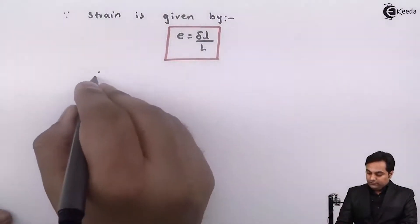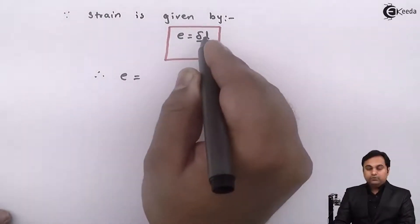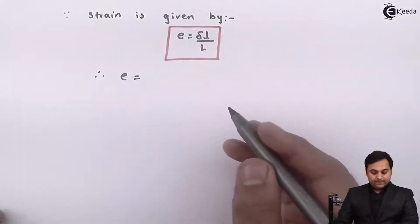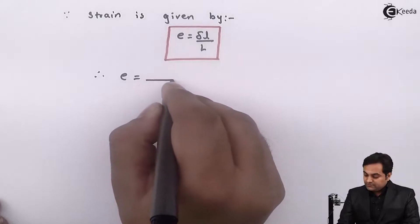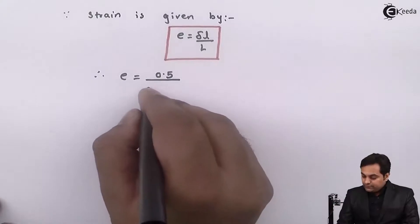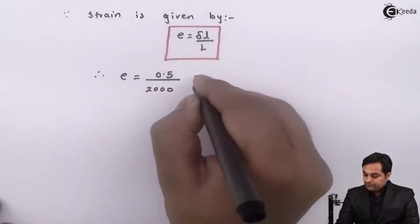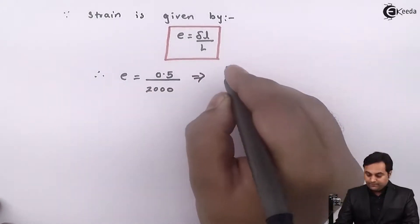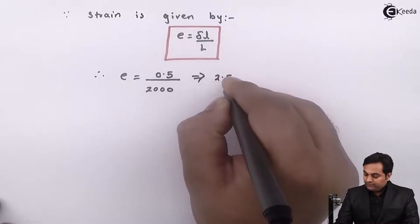So therefore strain is equal to change in length, it is given as 0.5, original length it is 2000. So your strain comes out to be 2.5